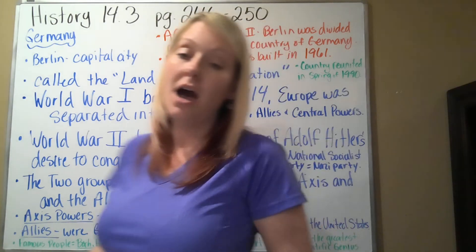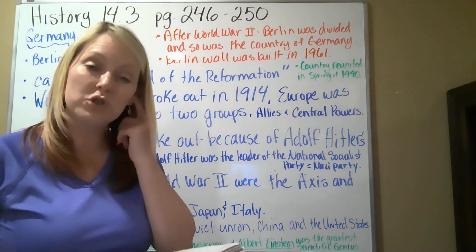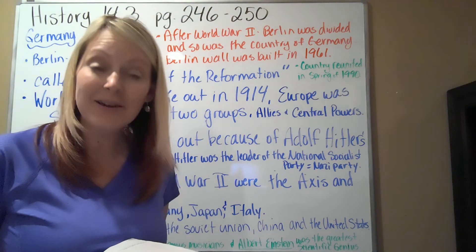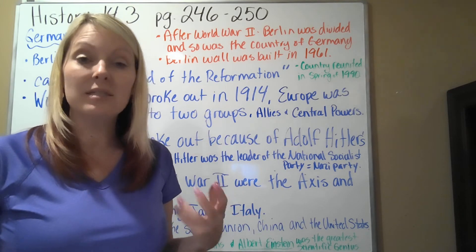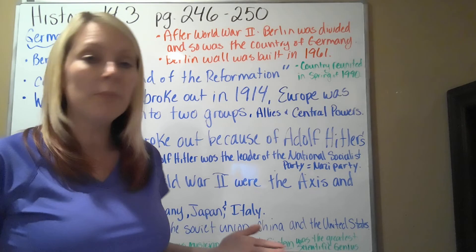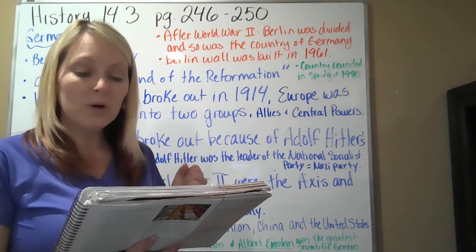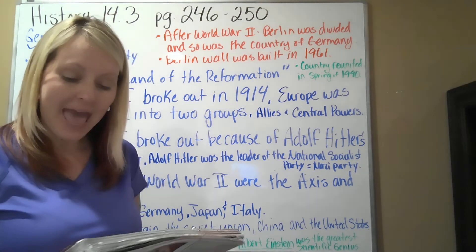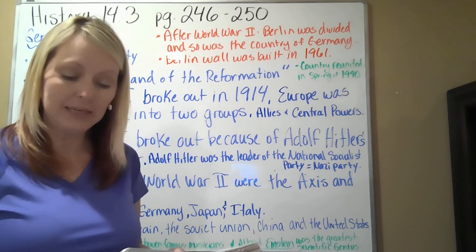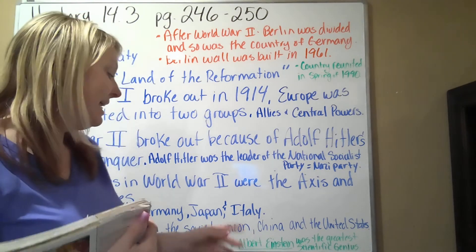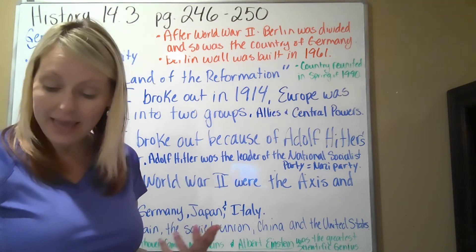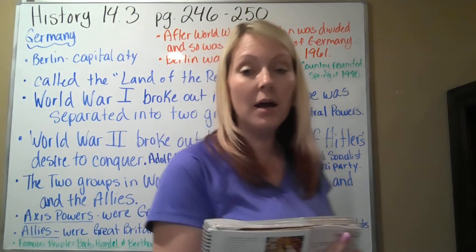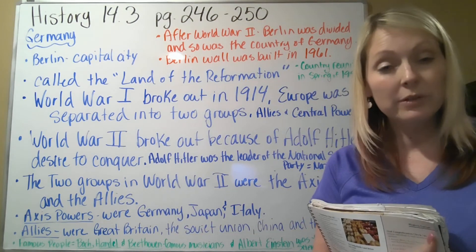Two wonderful scientists also came from Germany. Johann Kepler described how the planets orbit the sun — a very significant scientific discovery. Then there is Albert Einstein, described as the greatest scientific genius the world has ever known, who made important discoveries in chemistry, medicine, and physics. Einstein was originally from Germany but later became an American citizen in 1934.